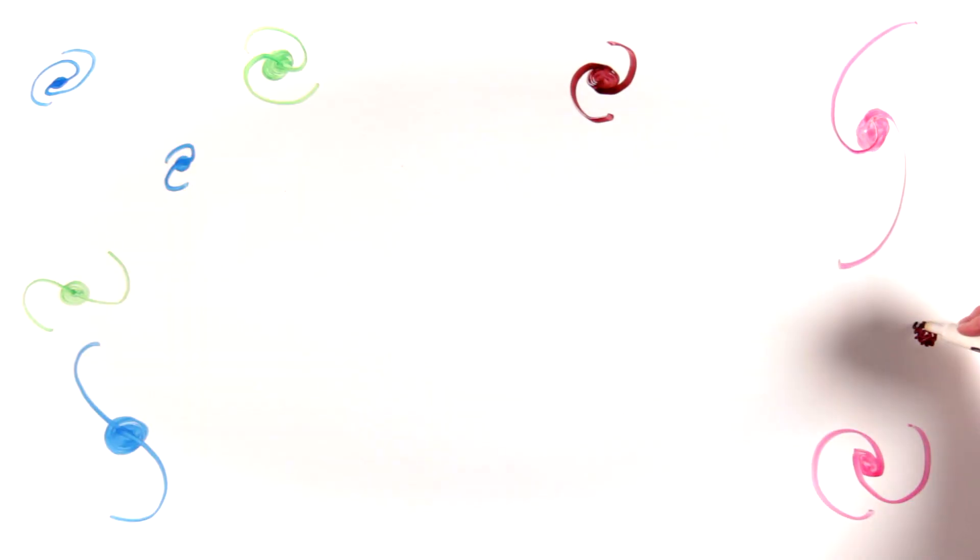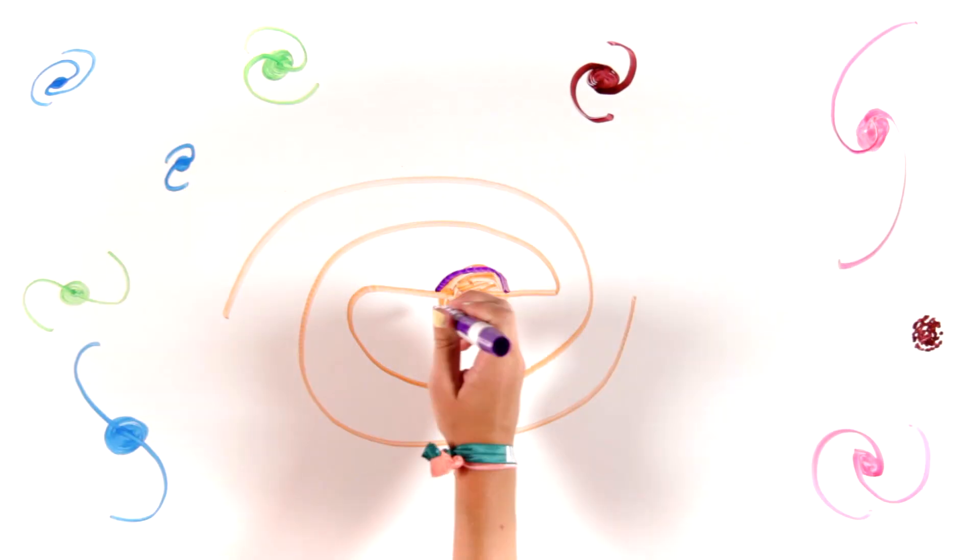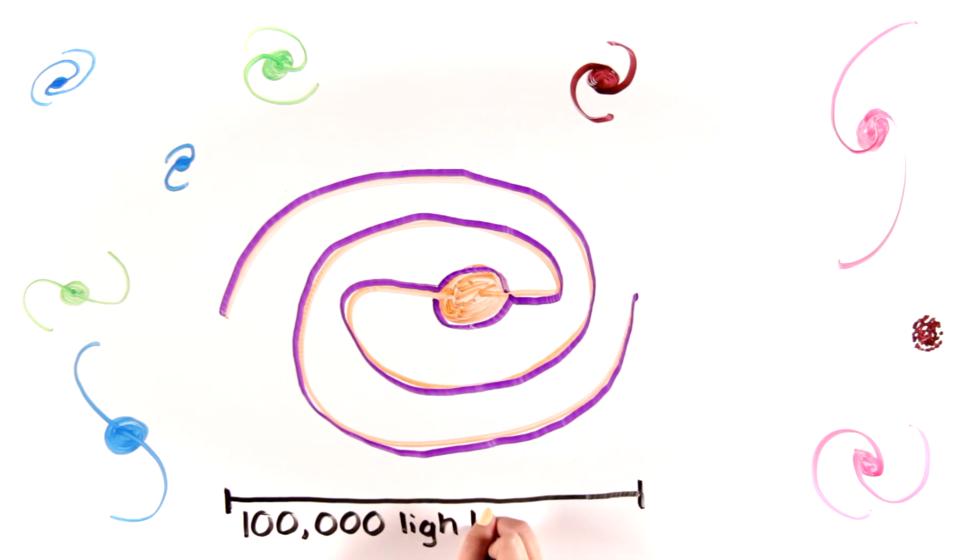Galaxies range in size. Our galaxy, the Milky Way, is on the large side, at about 100,000 light years across.